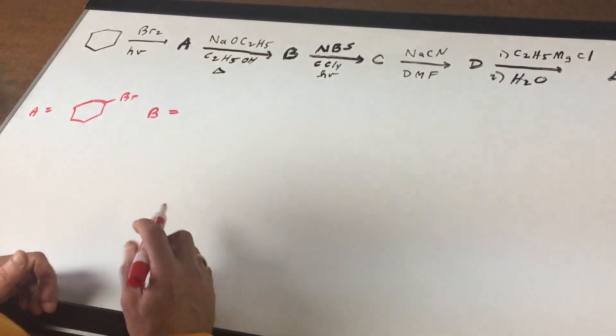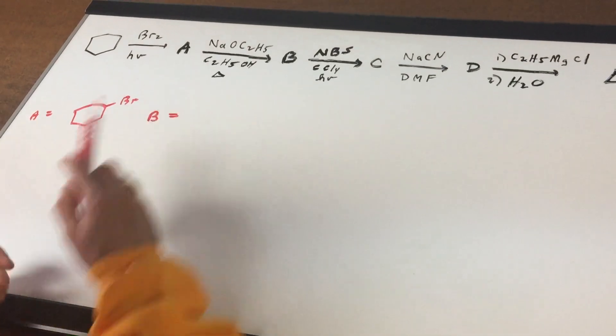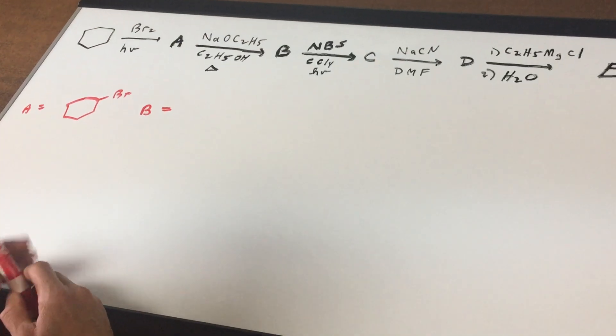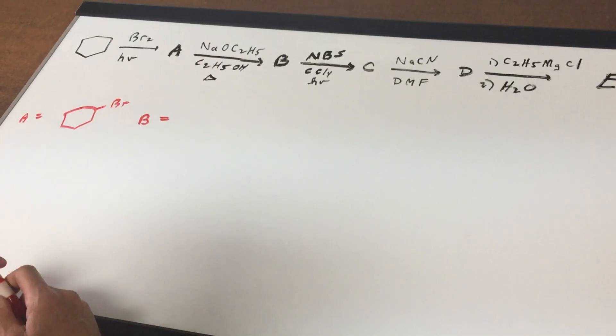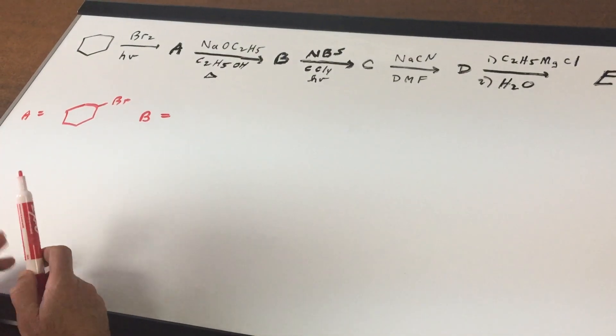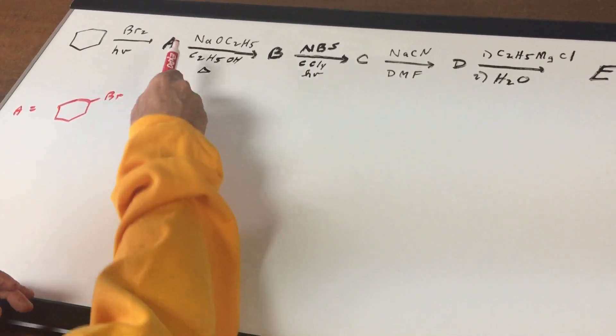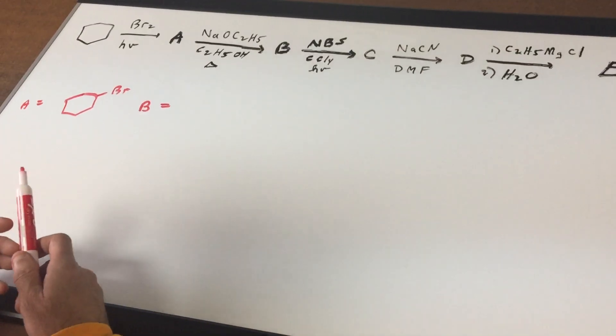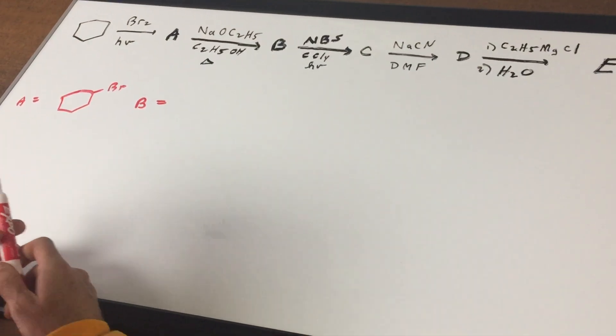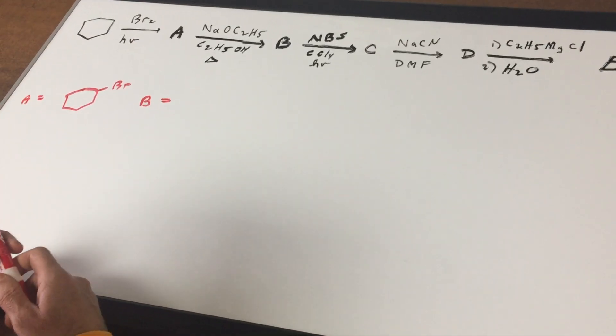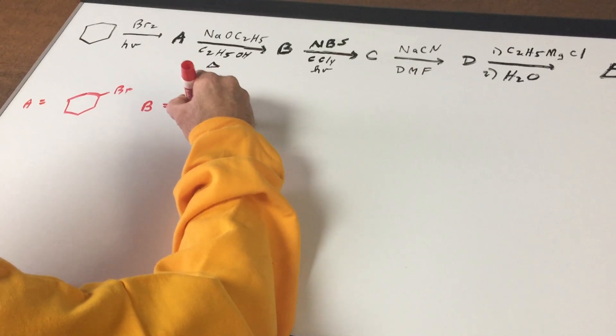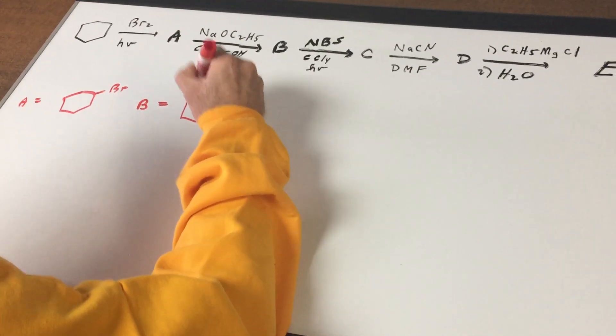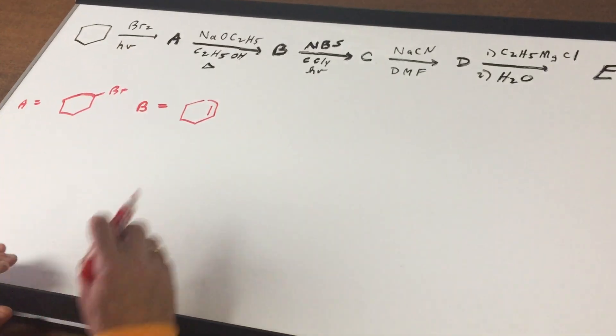Product B. We're going to take A and do an E2 reaction. This is sodium methoxide and ethanol with heat. A secondary halide with a very strong base such as sodium methoxide, sodamide, any one of these with heat will always favor the E2 reaction and therefore I would get a cyclohexene.